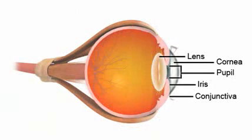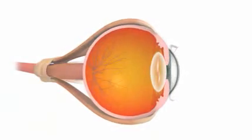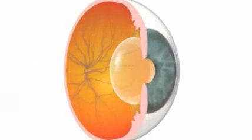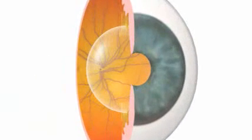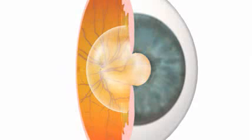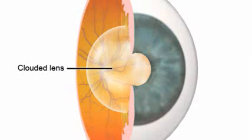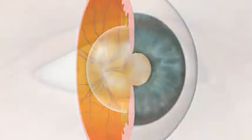Here we show the different parts of the eye. A cataract is caused by changes in the lens protein of your eye. It usually develops over a long period of time. Most often a cataract is due to the ageing process.